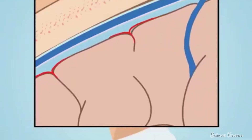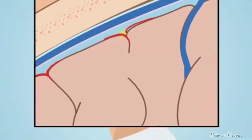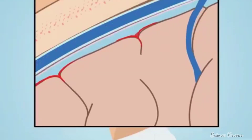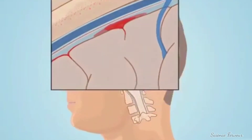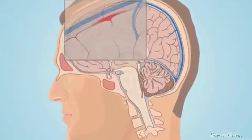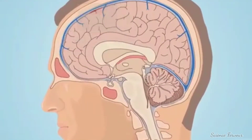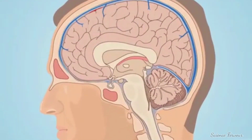In subarachnoid hemorrhage, a blood vessel bursts near the surface of the brain and blood leaks into the space between the brain and the skull. Blood that collects in this space puts pressure on brain tissue and causes blood vessels to spasm.